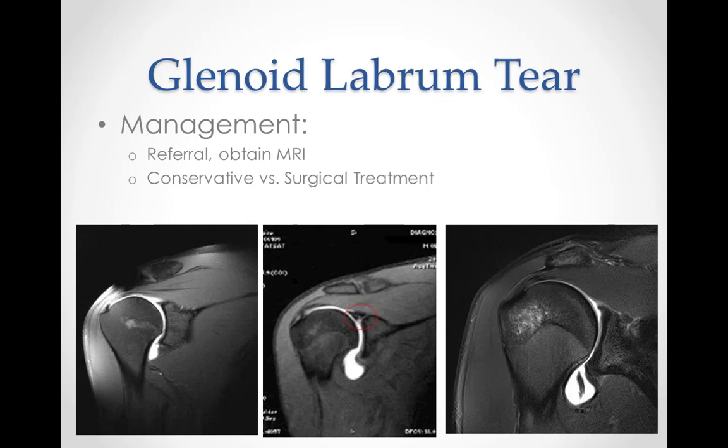For glenoid labrum tears, management includes rest and applying cold therapy to reduce pain and inflammation. NSAIDs may be used to help with pain modulation. Unstable injuries will require surgery to reattach the labrum to the glenoid. Bankart lesions and SLAP lesions will also require surgery, and any underlying cause such as shoulder instability should be addressed during surgery. Following surgery, the shoulder will usually be kept in a sling for three to four weeks. After six weeks, more specific sports training can be done, although full fitness may take three to four months to return.